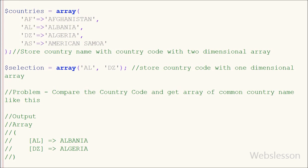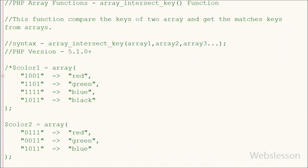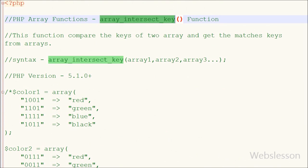So this was my video tutorial on the array_intersect_key() function, which returns an array containing the entries from array 1 that are present in all of the other arrays. If you like this video, please share it with your friends and on social media. Subscribe to my YouTube channel to get more updates.